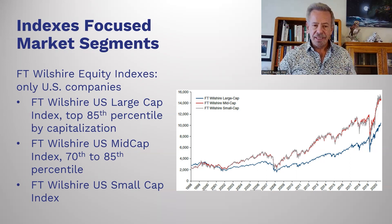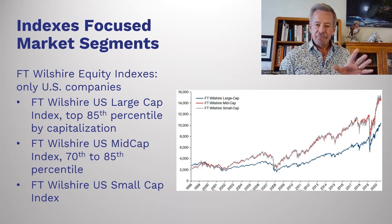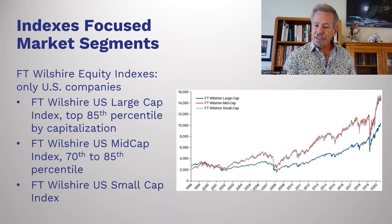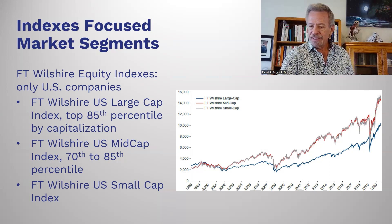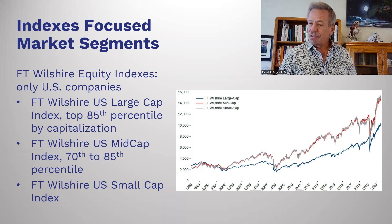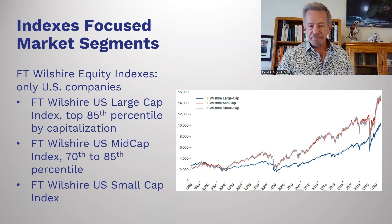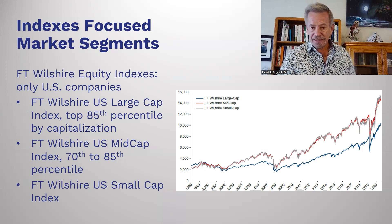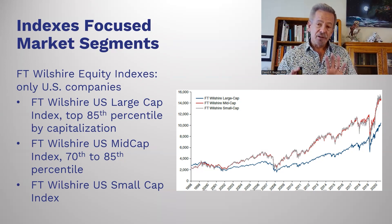Here's another one — the Wilshire Equity Index. It is U.S. companies only, and it covers large capitalization, mid capitalization, and small capitalization — three different categories. You can see the differences in the chart. When you look at 2019–2020 and the pandemic, you'll see how it affected different companies. The large caps at the bottom weren't affected as drastically as the small caps.